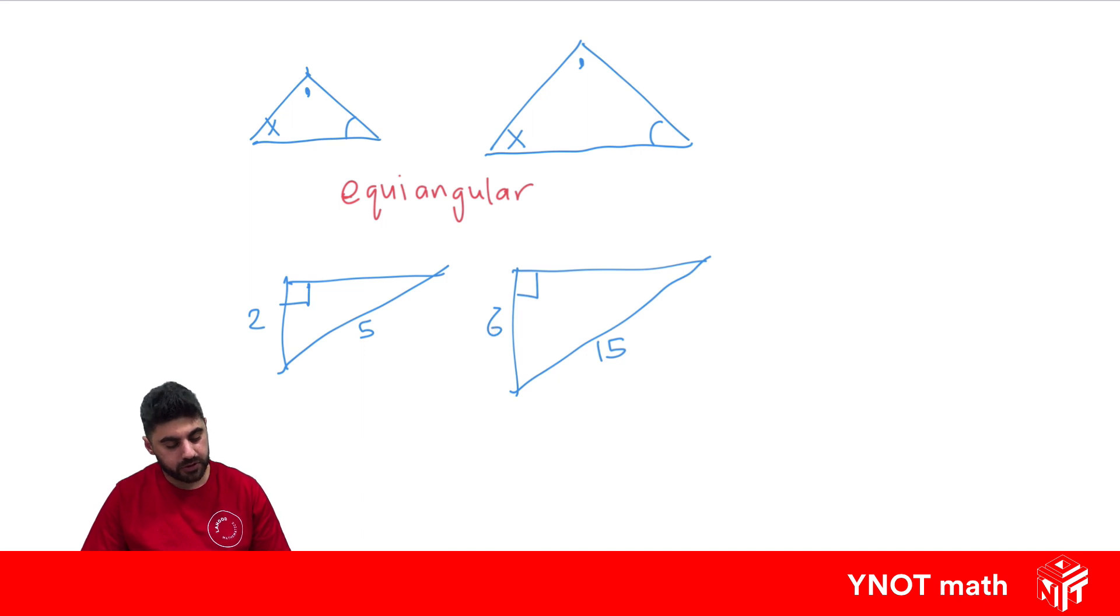We have a hypotenuse in equal proportion and a remaining side in equal proportion. Here we can say that one side and a hypotenuse are in equal proportion, and equal right angles. And they're our four similar triangle tests.